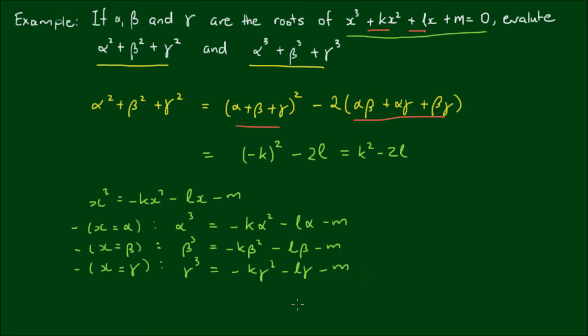So if we add all these terms together, we have α³ plus β³ plus γ³ is equal to... Alright, so if I sum all these vertically, I get negative k outside of (α² plus β² plus γ²) minus L outside of (α plus β plus γ), and then minus 3m.